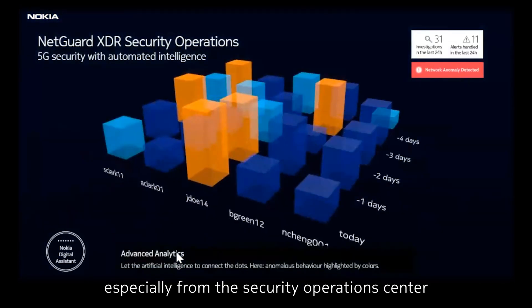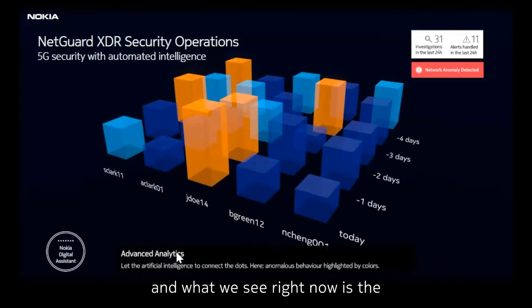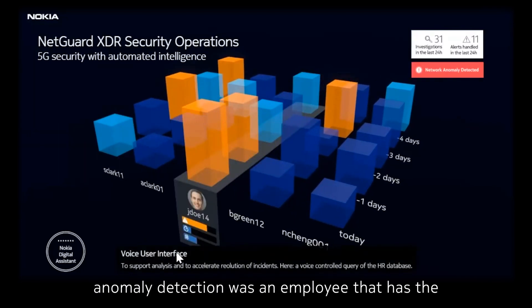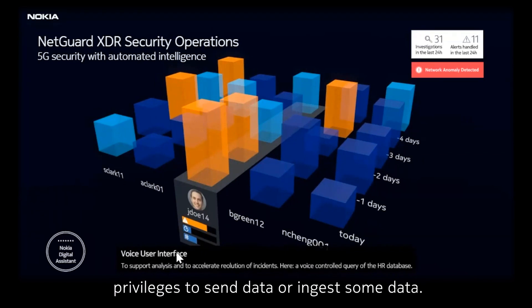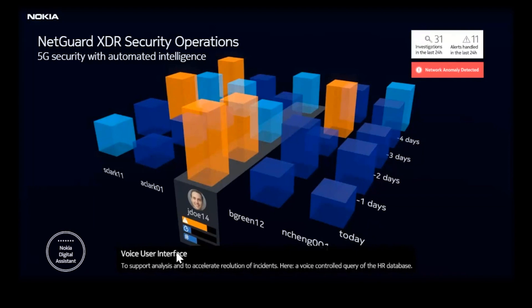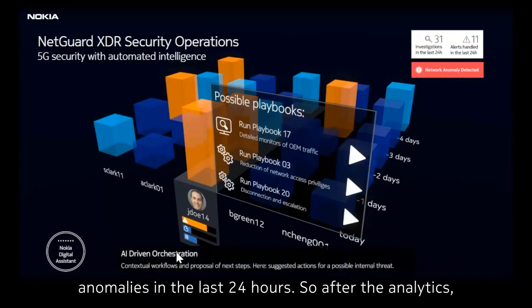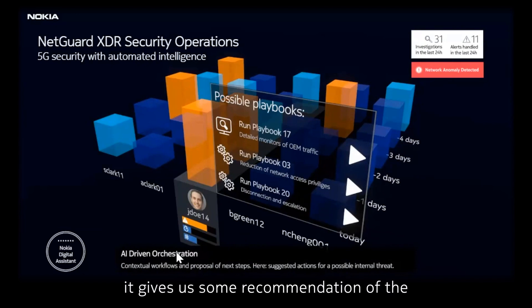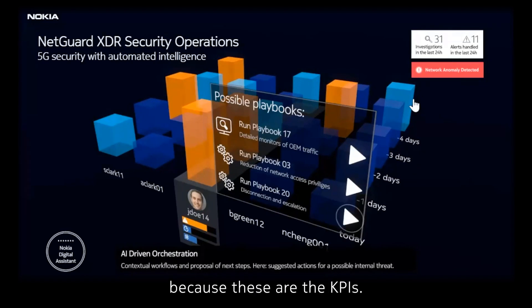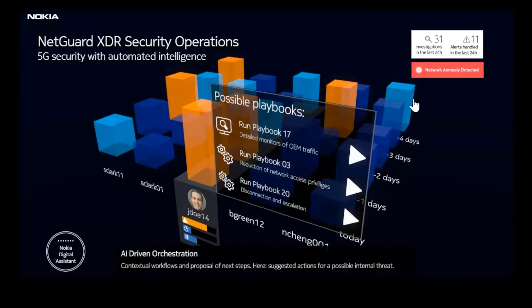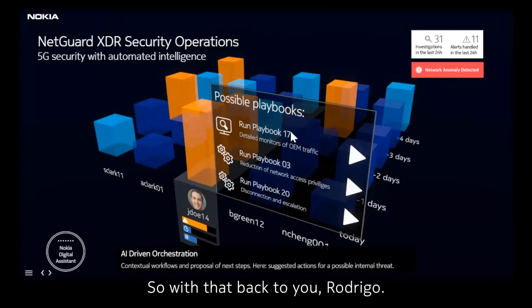We continue looking into the service provider view — specifically from the security operation center. The software starts analytics to understand that the root cause of this anomaly detection was an employee who had privileges to send data. In our case, it's J2 14, who performed anomalies in the last 24 hours. After the analytics come from the software, it gives us a recommendation of the next upcoming mitigation processes — because the KPIs are: early detection, eliminating decision-making time, and being fast on mitigation time to reduce the cost of breaches.